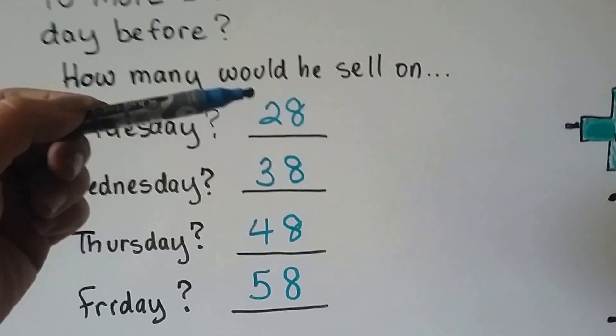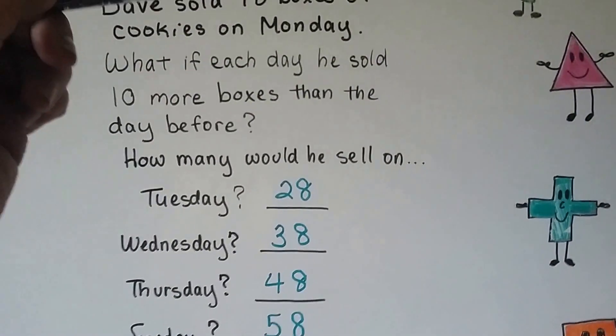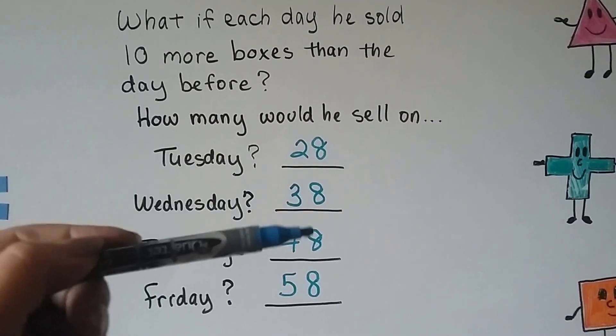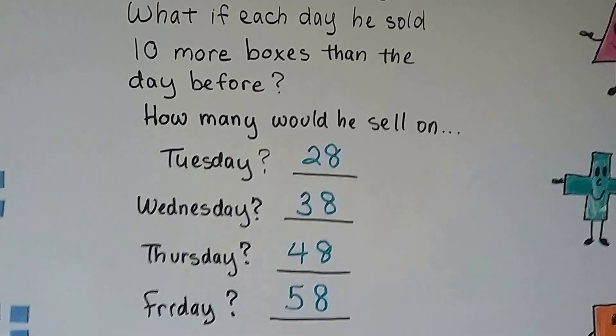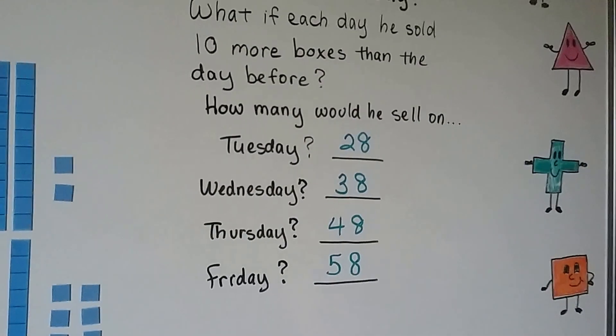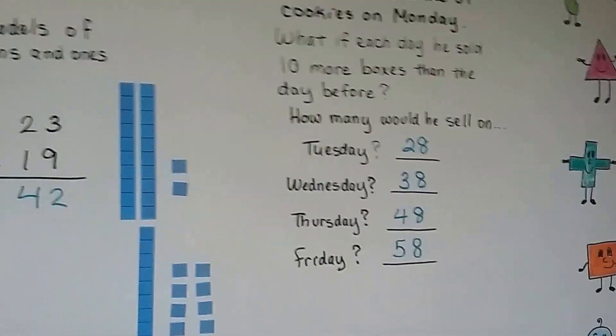So we just counted by 10, starting with 18. We went 18, 28, 38, 48, 58, because he sold 10 more boxes than the day before.